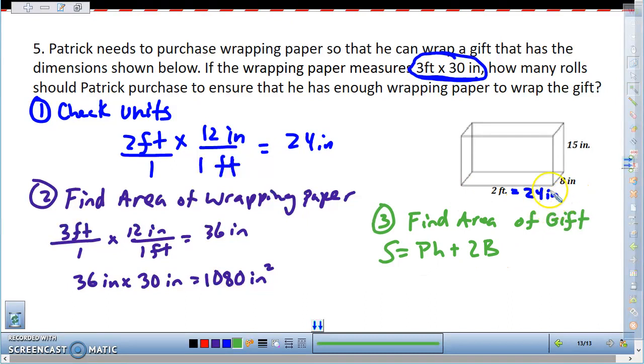So the perimeter of the base would be 24 - I'll go ahead and do this over here on the side. So the perimeter of the base is 24 plus 8 plus 24 plus 8, and this ends up equaling 64 inches. Okay, that's the perimeter.